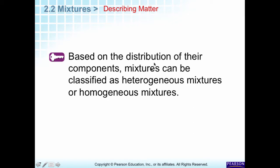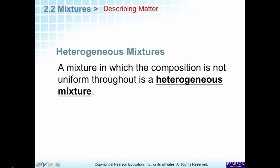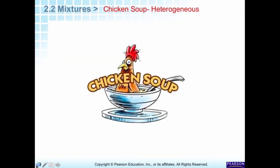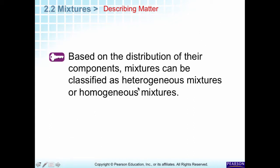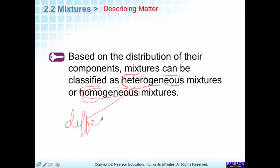We have two types of mixtures: heterogeneous and homogeneous. We look at the two prefixes — 'hetero' means different, and 'homo' means the same. So heterogeneous mixtures are ones where you can see the different components, and homogeneous mixtures are ones where everything is blended so nicely that you can't see the components that make it up.